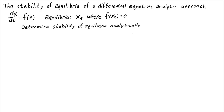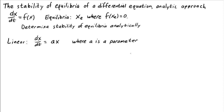Let's see now how we can determine the stability of equilibria analytically, without drawing a graph. To do this, let's start with the simplest type of autonomous differential equation — a linear one — of the form dx/dt equals a times x, where a is a parameter, just some number.